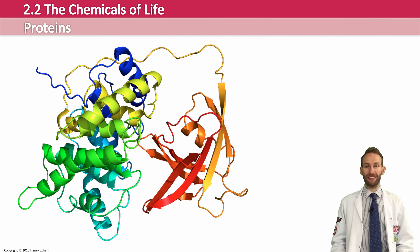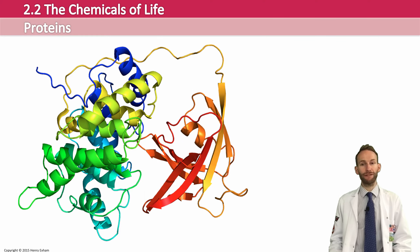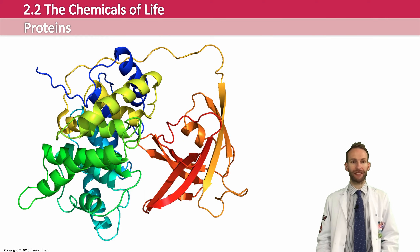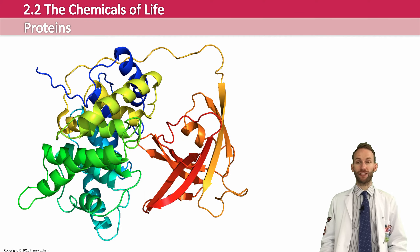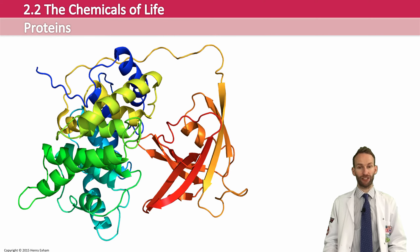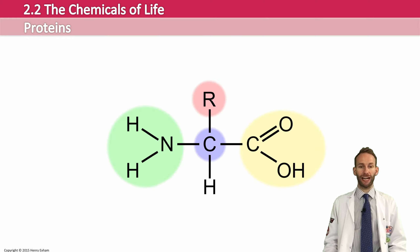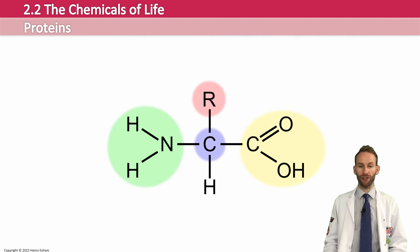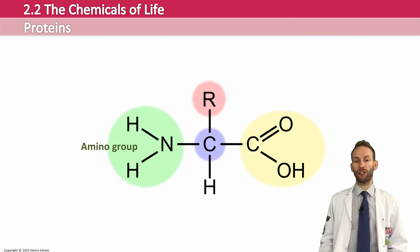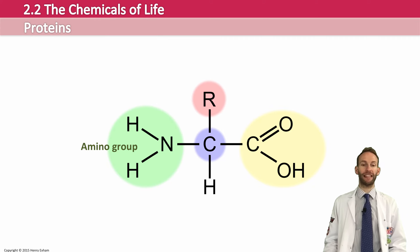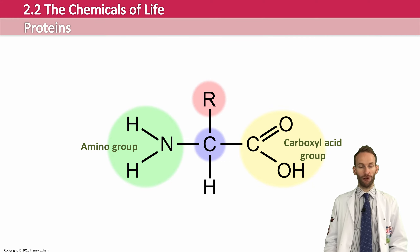Proteins are made up of amino acids. There are about 20 different types of amino acids, but they all have the same basic structure, which you need to know about. They have a central carbon atom, an amino group on one side — NH2 — and a carboxylic acid group. That's where they get the name amino acid from. That structure is the same on all amino acids.